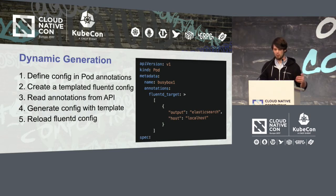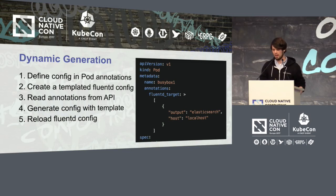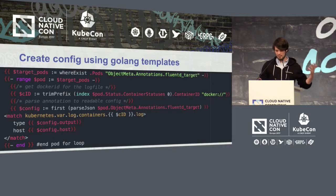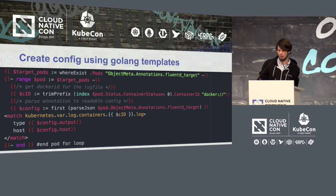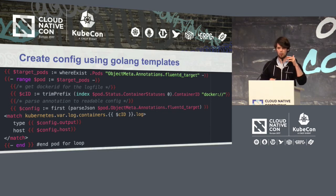For example, here on the right you can see an example pod spec where you put the Fluentd target — where the outputs of these pods should be routed to. In this case, an Elasticsearch instance or something else. Then you create a templated Fluentd config. I use the Golang template language where you loop over every pod, look for the target annotations, filter some information out like container ID, and then just build the Fluentd config from that. Pretty straightforward.